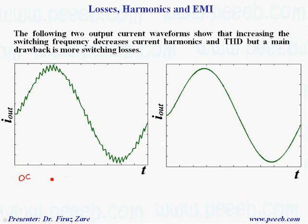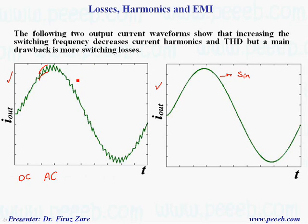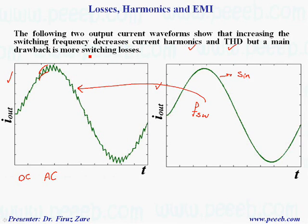Now, if the output voltage is AC, how can we control harmonics and THD? Looking at two current waveforms, one has significant ripple while the other looks almost like a sine wave. The cleaner waveform has a higher switching frequency. By increasing switching frequency, we can reduce harmonics and total harmonic distortion, but the drawback is increased switching losses.